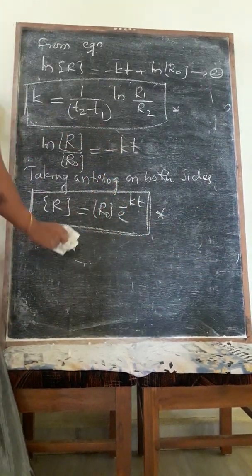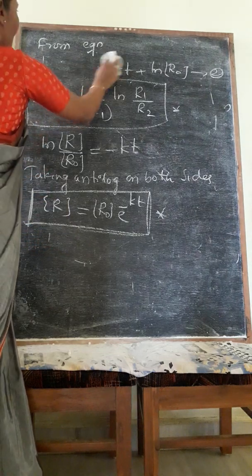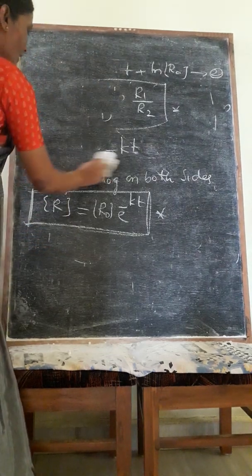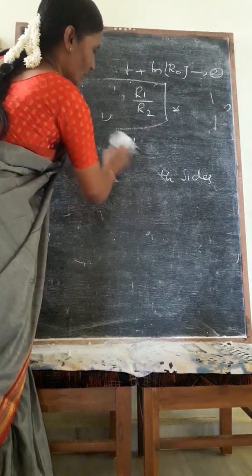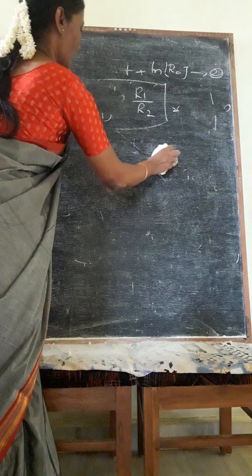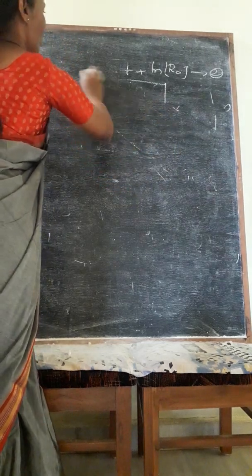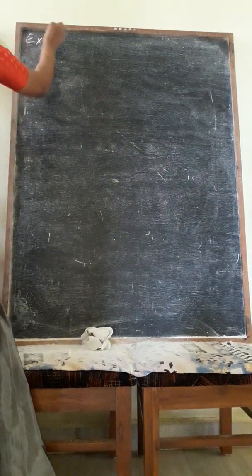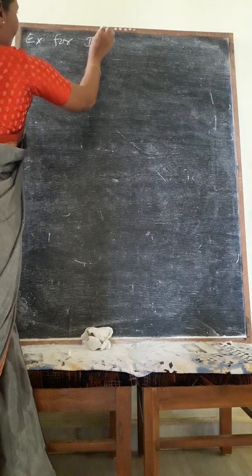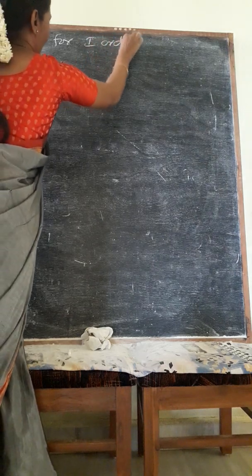These are two important variations: one is zero order reaction, another is first order reaction. We have represented graphically how zero order and first order reactions. Now we will take few examples for first order reaction.